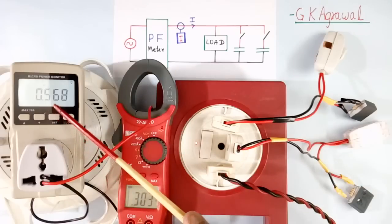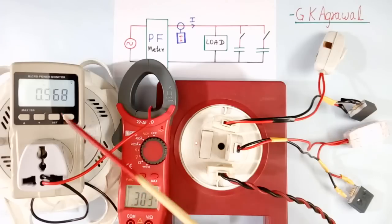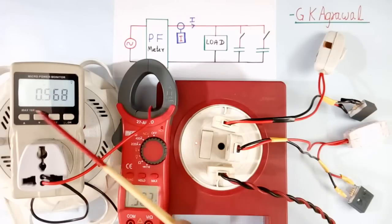You are seeing power factor of tube light is 0.568. And current is 0.3 ampere. It is very bad power factor.